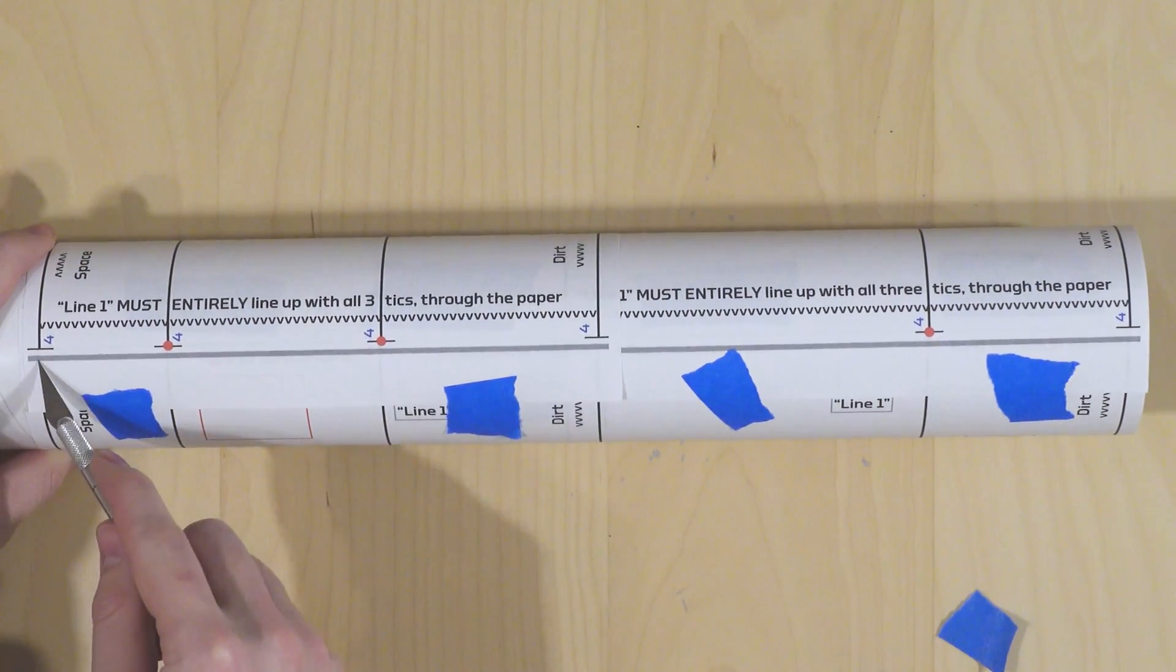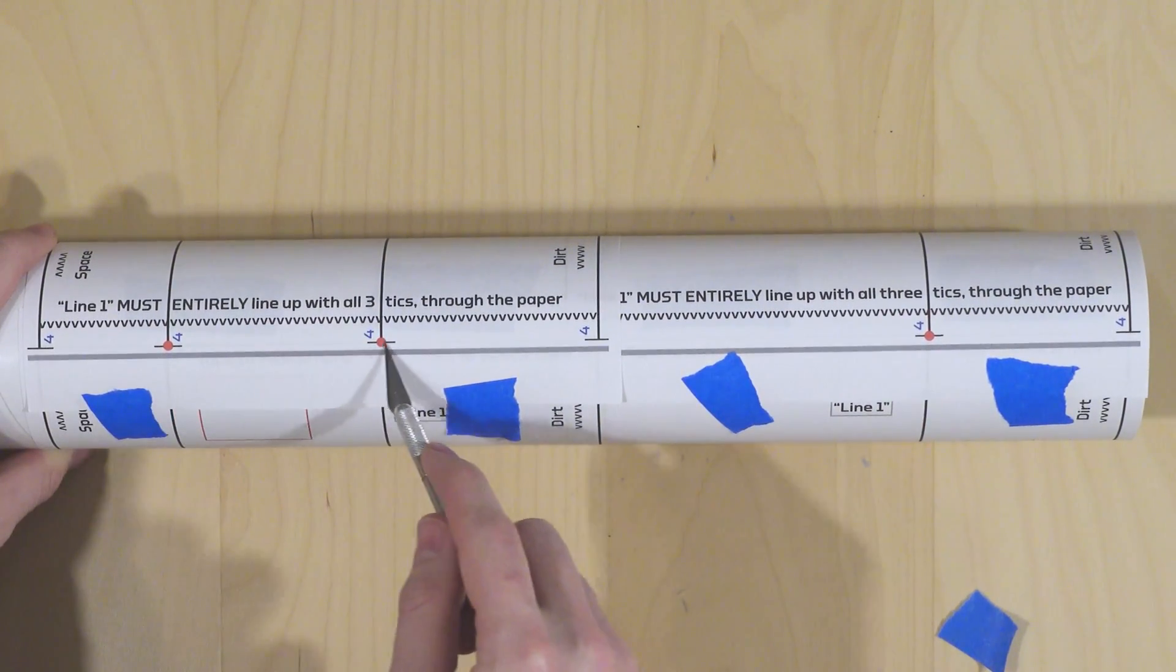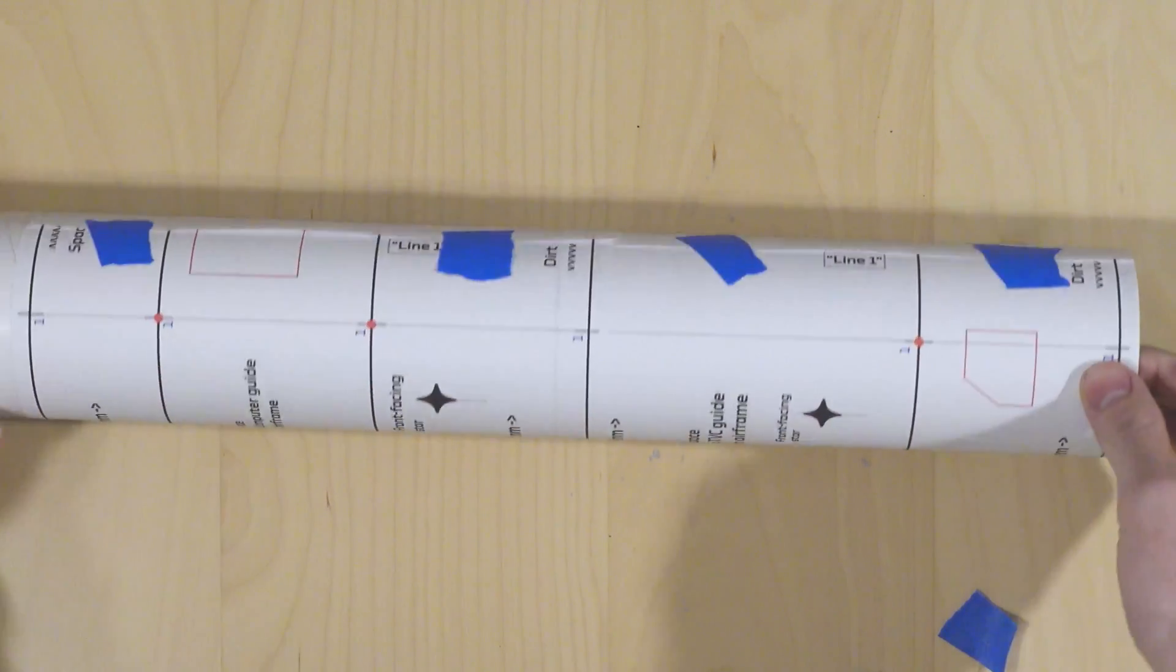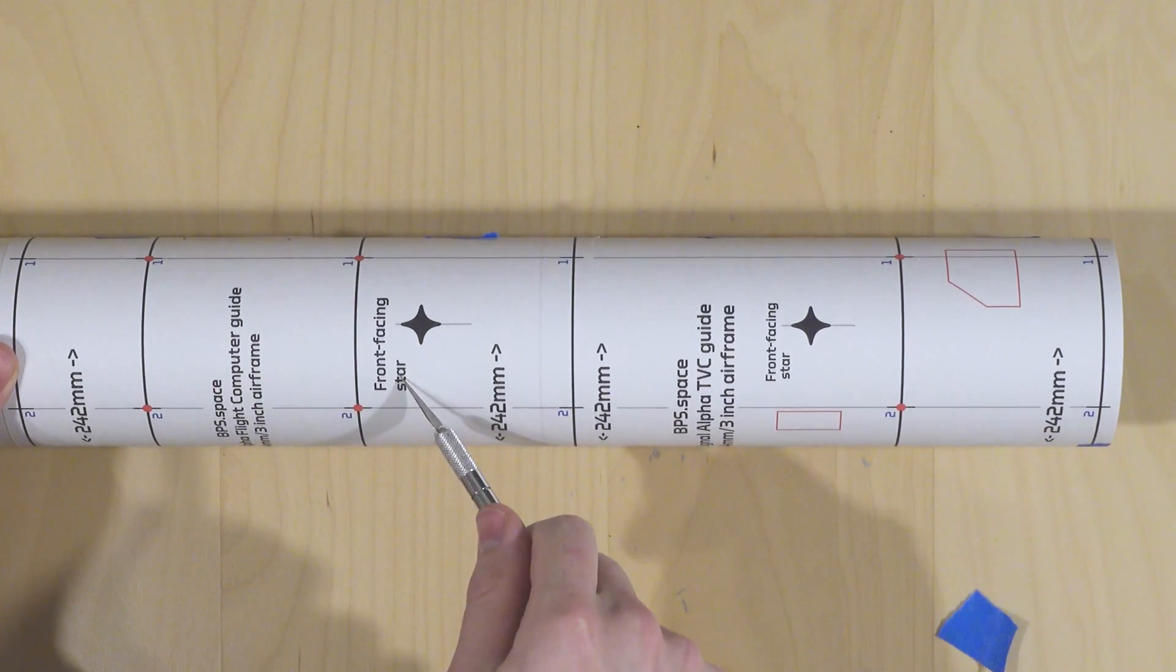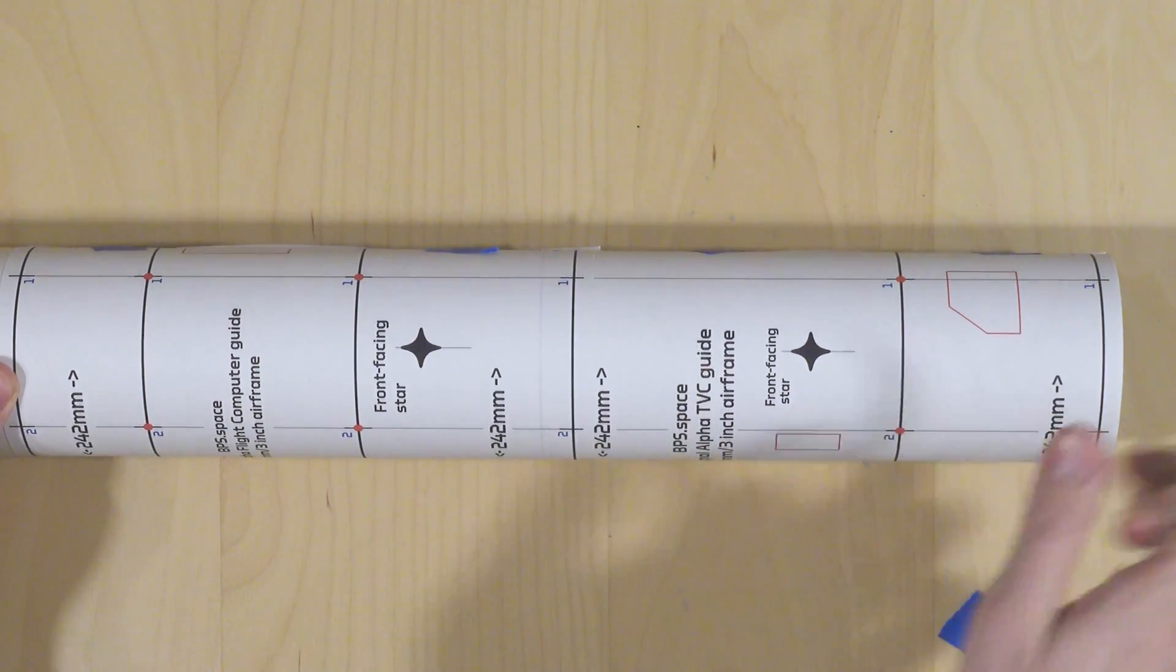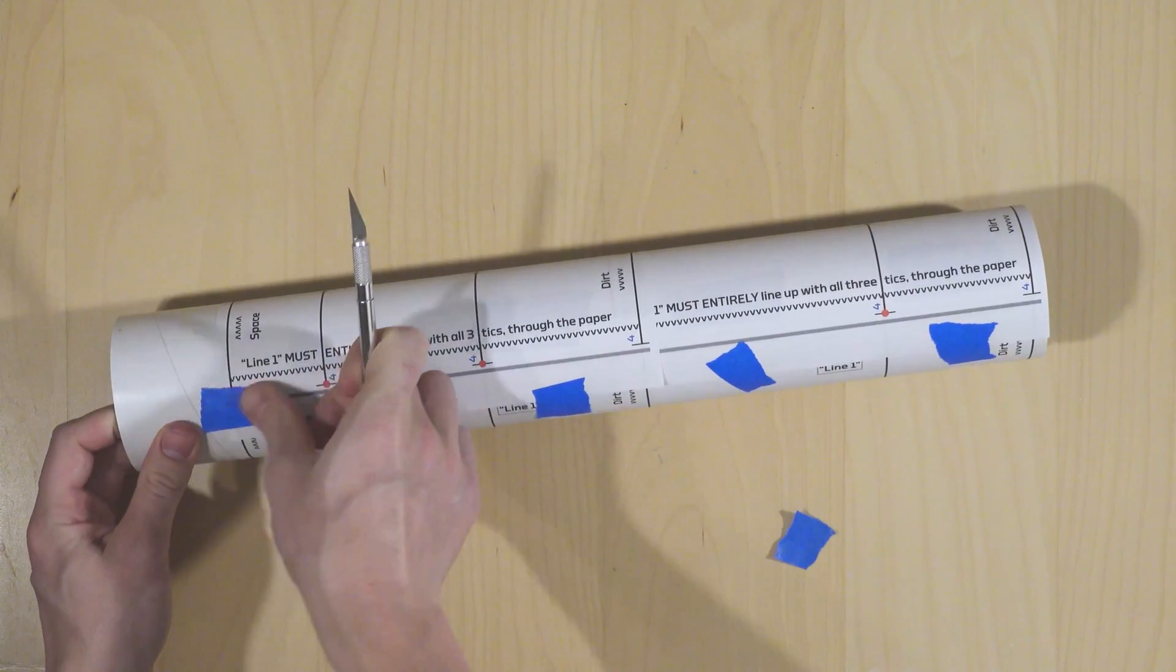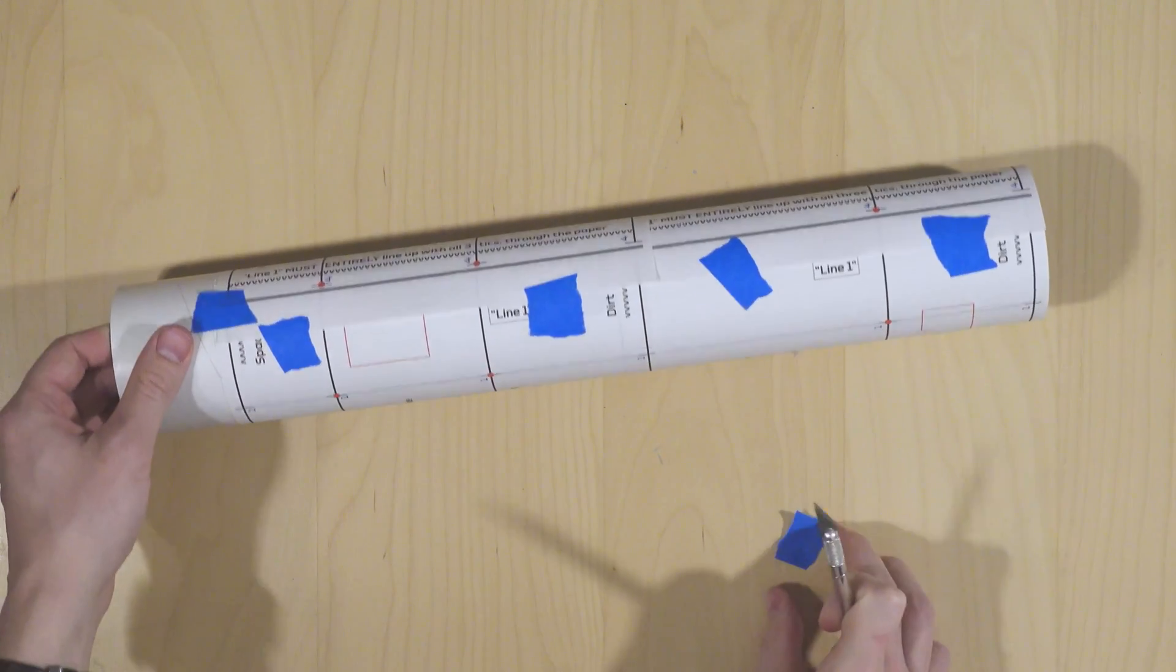Once again, because this is rocket science, we want to make sure we're doing it right, so we've got 4 and 4 all lined up. The same goes for all of these other numbers, as well as the front-facing stars, which correspond to the stars on the 3D printed parts. Again, to prevent it from moving around, I'll put a couple more pieces of tape on the paper.